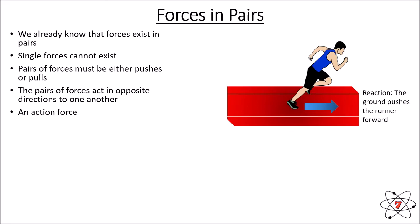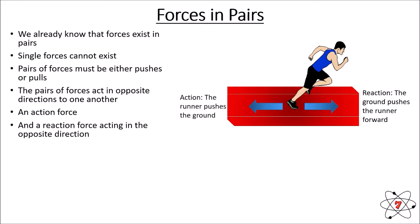We have a runner as our action force. The runner is trying to run forwards. The reaction force is that the ground pushes the runner forward — the action is the runner pushes on the ground, and the reaction is the ground pushes the runner forward. So we have an action and a reaction, which might be triggering something you already know in your memory about reactions and forces.